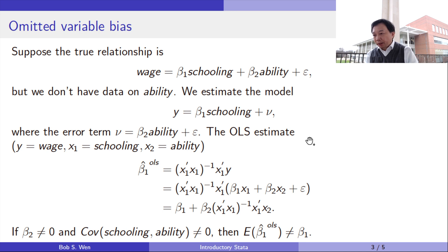In the following, I prove that the OLS estimate is biased if beta 2 is not zero and covariance between schooling and ability is not zero. In other words, if ability affects wage and ability is correlated with schooling, then the OLS estimate is biased.